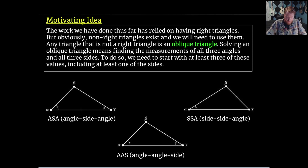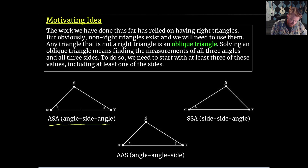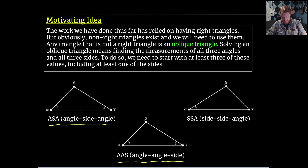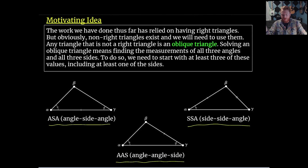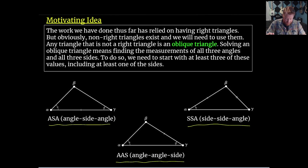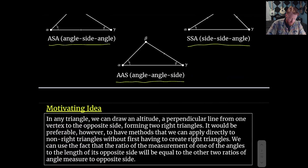Here we have some different triangle relationships. If we know two of the angles and the side in between them — angle-side-angle — we can use these ideas. If we know two of the angles and one of the adjacent sides — angle-angle-side — we can use those ideas. Or if we know two of the sides and the angle that is not in between them — side-side-angle — we can use these relationships. We need to be in one of these cases to move forward.